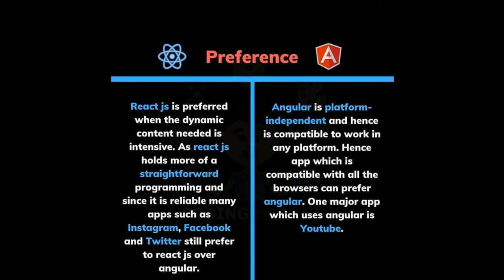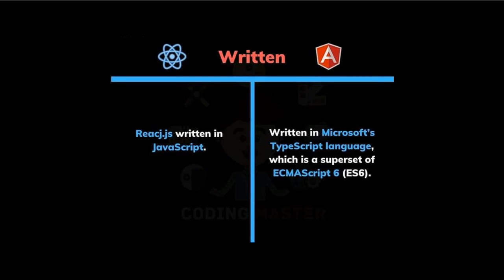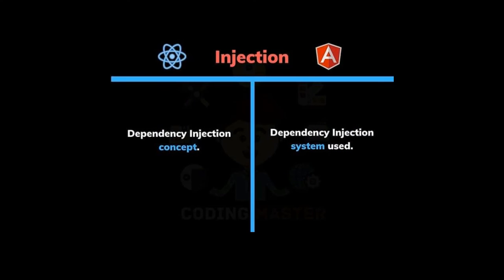One of the major examples of an app that uses Angular is YouTube. ReactJS is written in JavaScript, whereas for Angular we have the Microsoft TypeScript language, which is a superset of ECMAScript 6. On an injection basis, the dependency injection concept and the dependency injection system is used for Angular.